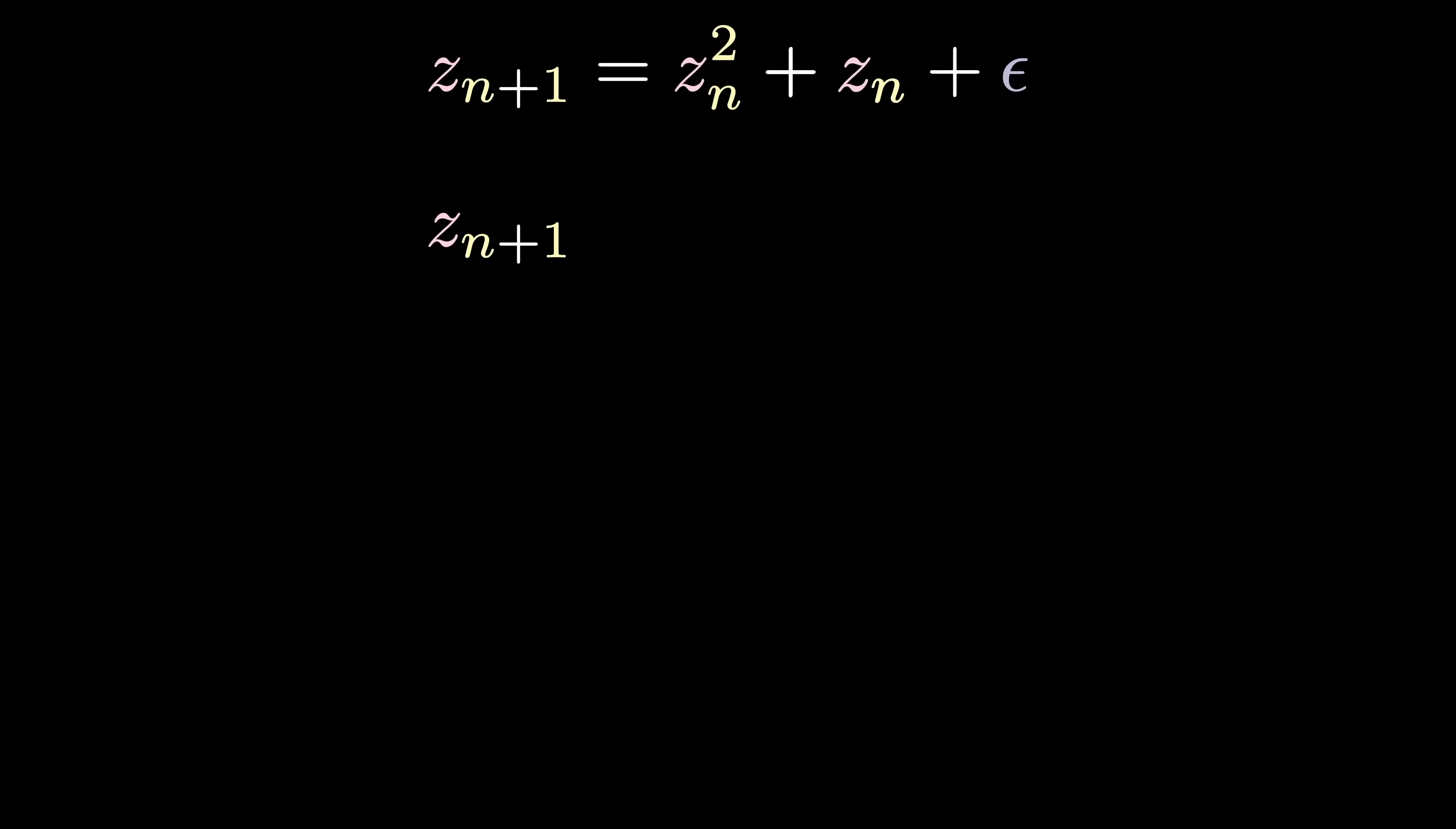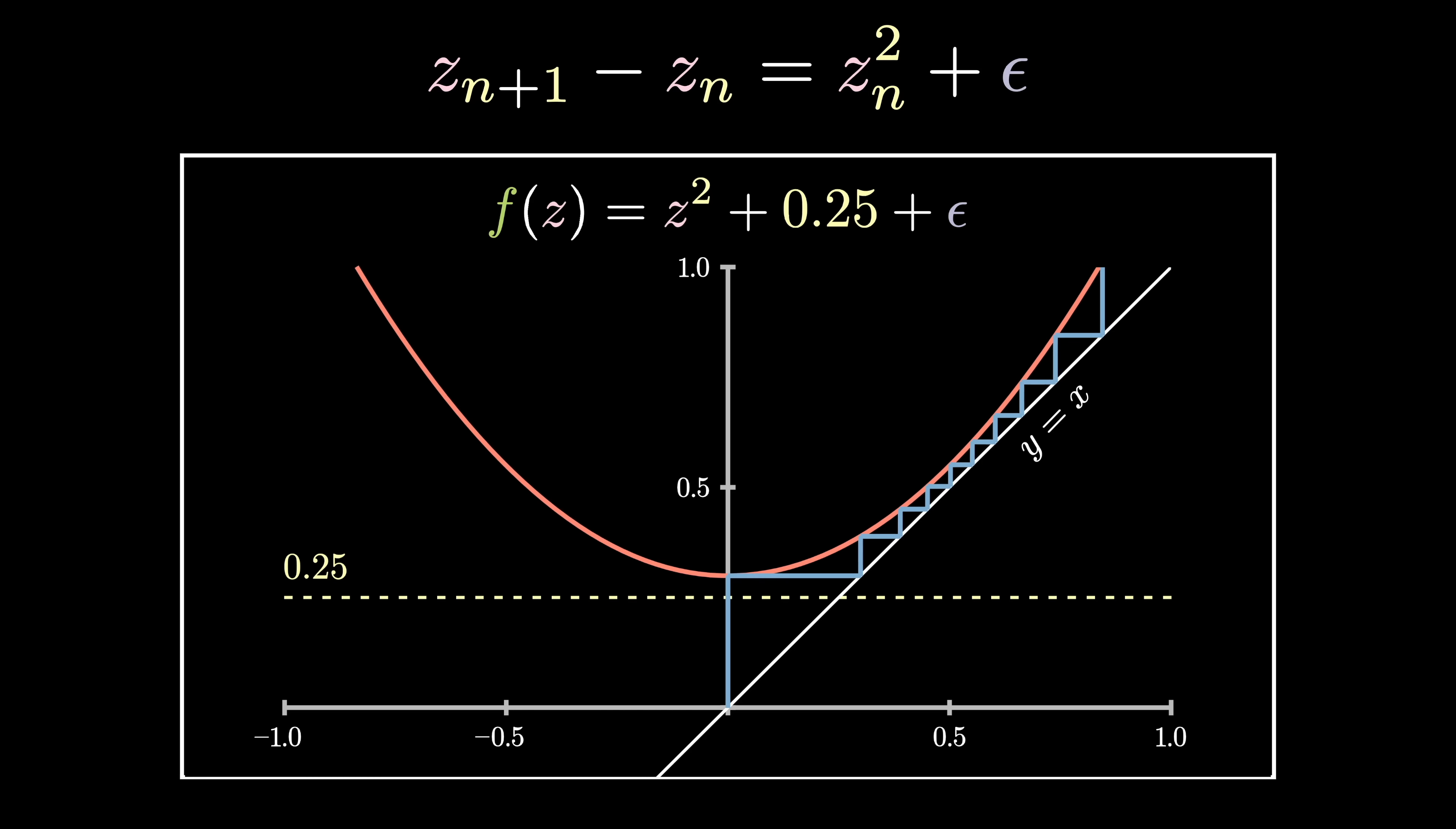For the next step, let's actually move z sub n to the other side, giving us z sub n plus 1 minus z sub n on the left hand. Now what happens as epsilon tends to 0? Remember this visual earlier, with the parabola shifting down? Notice how as epsilon tends to 0, around the point 1 half, 1 half, the difference between the step z sub n and the step z sub n plus 1 gets smaller and smaller.